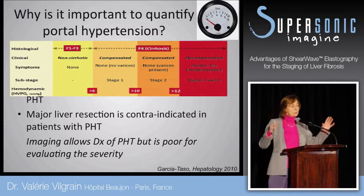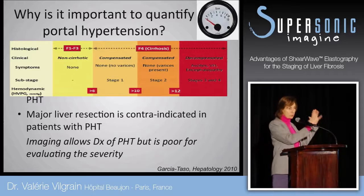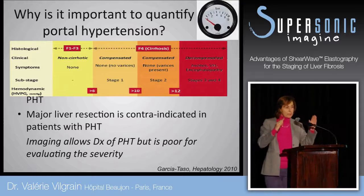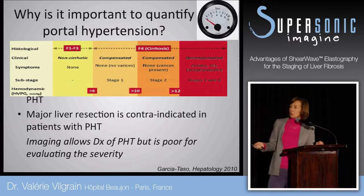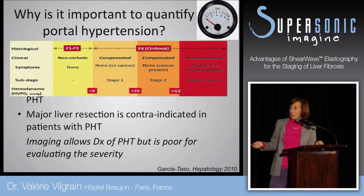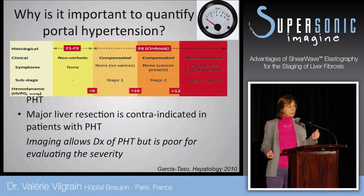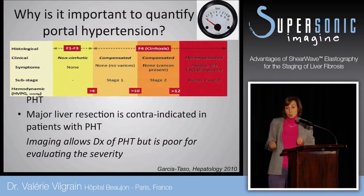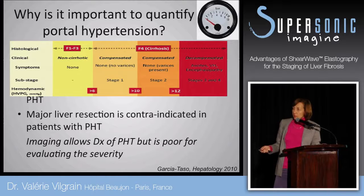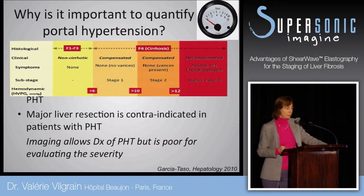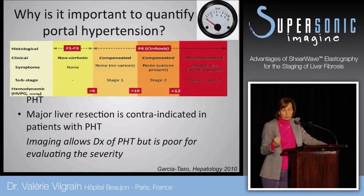Before, we used to consider cirrhosis as a whole entity, but there are many different stages. Some patients have compensated cirrhosis, while others have decompensated. There are in fact three stages, and complications are really related to these different stages. The important parameter is the severity of portal hypertension, which is usually obtained only invasively. Major liver resection is contraindicated in portal hypertension, so it is crucial to obtain this parameter non-invasively.